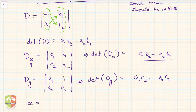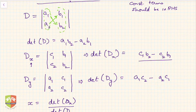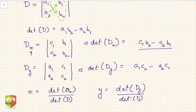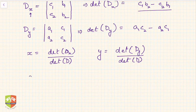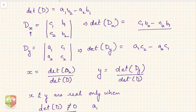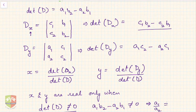Using these determinants, x equals Dx divided by D, and y equals Dy divided by D. Clearly, x and y are real only when the denominator is not zero — that is, determinant D must not equal zero. This means a₁b₂ minus a₂b₁ ≠ 0, or equivalently a₁/a₂ ≠ b₁/b₂, a condition you may have encountered when studying the consistency of linear equations.